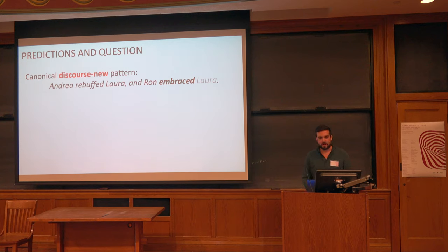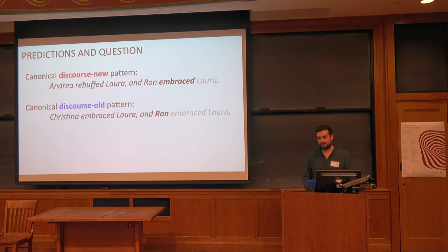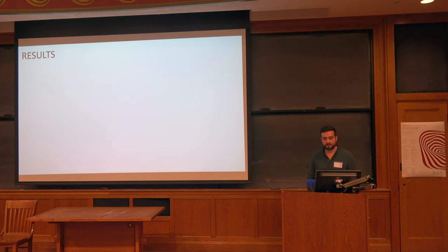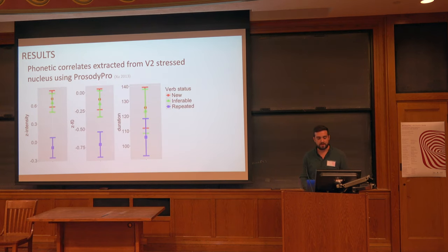Everyone knows from this morning's keynote what canonical prosody we expect: in the new condition, we expect a nuclear pitch accent on the second verb and a de-accented object. When the verb is discourse old, we expect it to also be de-accented. The question in experiment one is whether inferable verb sentences act more similar to discourse-new or discourse-old sentences. We extracted acoustic correlates of prominence from the stressed nucleus of the verb — mean intensity, mean F0, and duration of the nucleus. The results show a pretty consistent pattern: new and inferable verbs both had higher values, to the exclusion of repeated verbs, and this comparison is significant.